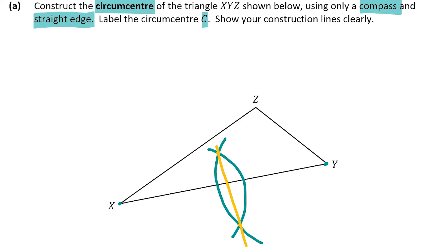Now do the same for another side — let's do ZY. Get your compass, put the end with no pencil on Z, open it so it passes halfway along the line, and swing an arc. Do the same on the other side with the same compass length — don't change it. Swing an arc, then find the two intersection points and draw a line through them with your ruler.